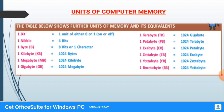After byte comes kilobyte (KB) — 1 kilobyte = 1024 bytes. Then megabyte (MB) — 1 MB = 1024 KB. Then gigabyte (GB) — 1 GB = 1024 MB. After that we have terabyte, petabyte, exabyte, zettabyte, yottabyte, and brontabyte. For now you need to focus on the main ones: bit, nibble, byte, KB, MB, GB.